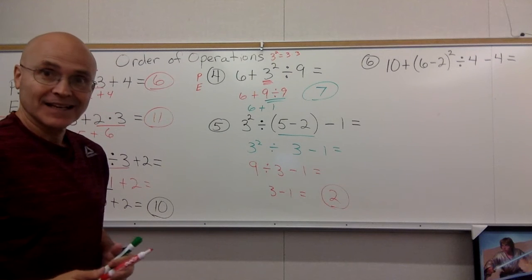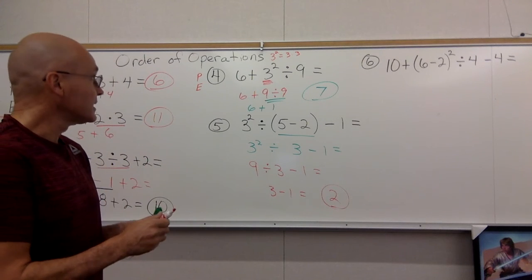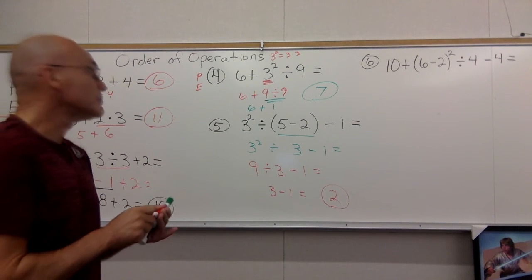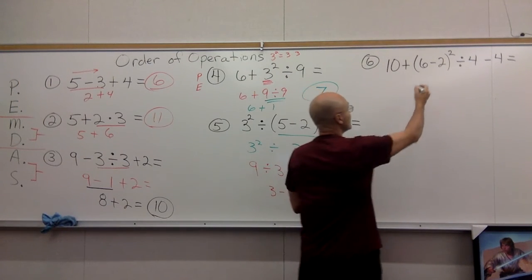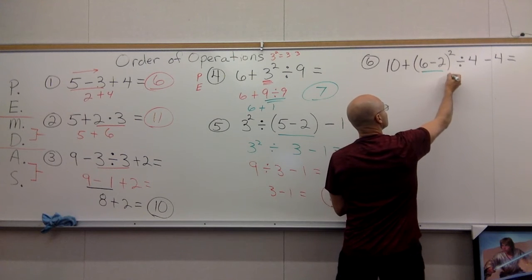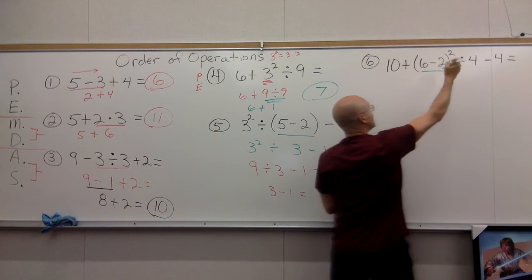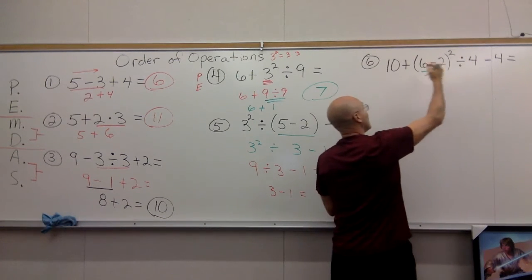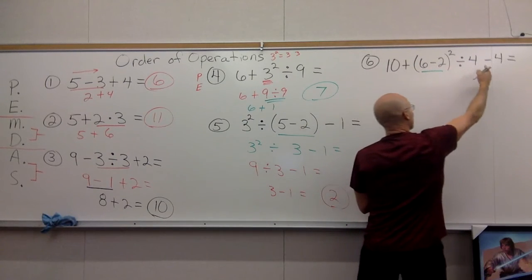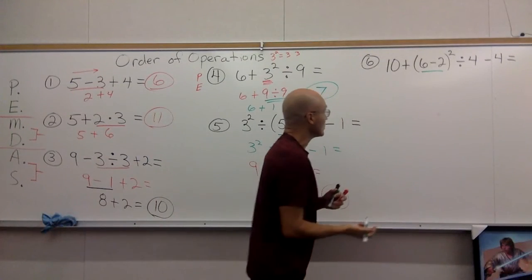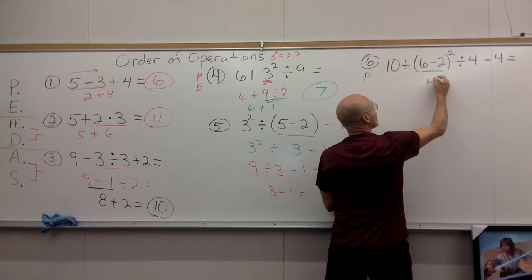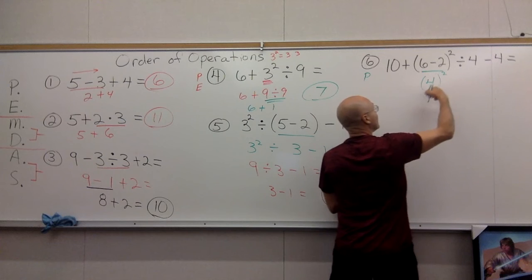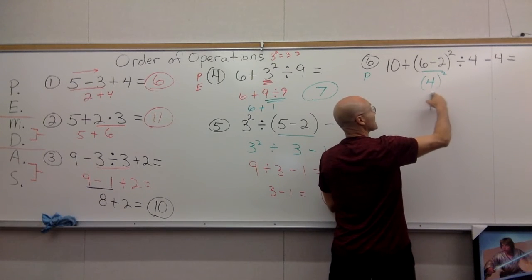Number six is the one that I see the most mistakes on, but let's just pick it apart here. We got parentheses, and then we're going to want to do exponent, and then we're going to want to divide, and then we're going to want to add, and then we're going to want to subtract in that order.